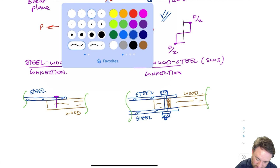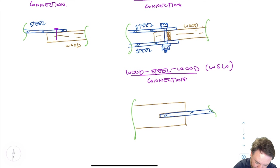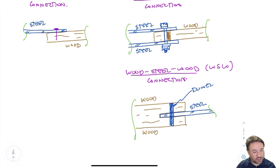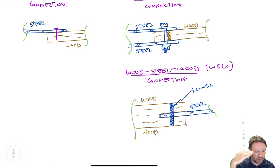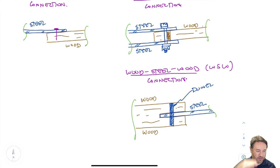This is a two shear plane bolted steel-wood-steel connection — one shear plane between the steel and wood at the top, and one between the steel and wood at the bottom. The opposite arrangement is a wood-steel-wood connection: two pieces of wood with a steel plate in the middle — or commonly, the same piece of wood with a slot cut in the center and a steel knife plate inserted. At the connection location there is wood, then steel, then wood, giving two shear planes on the dowel at the top and bottom of the steel plate.